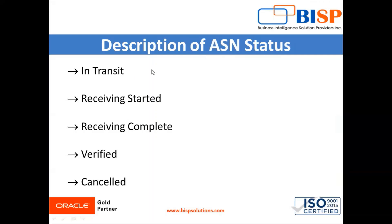Now let's look at the description of ASN statuses. We have multiple ASN statuses. The first one is Intransit — in this state, the Advanced Shipment Notice has been created but not yet received, meaning receiving has not started yet. The next status is Receiving Started — at this point the first quantity has been received, so receiving for the ASN has started but not completed.